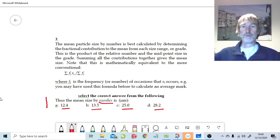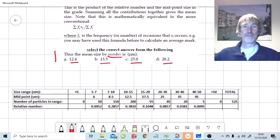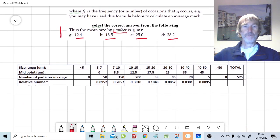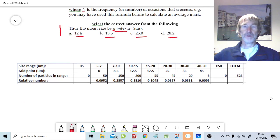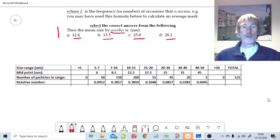So we better remind ourselves of the data before we can do the calculations. Here's the data. We have the size ranges of 5 to 7 microns, 7 to 10, 10 to 15, all the way up to 40 to 50. No particles bigger than 50 microns, no particles smaller than 5 microns.